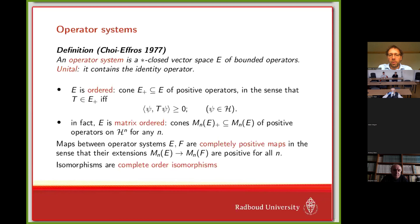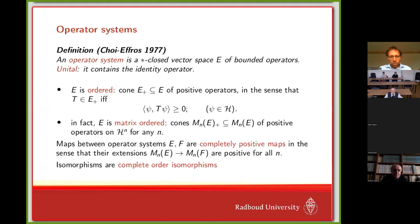What you see appearing is a structure that can be formulated without referring to operators — just a star vector space with a cone of positive elements, where positivity extends to matrices of E. That's the abstract operator system. It's possible, as shown in Choi and Effros, to realize them always as concrete operator systems. The operator systems I will use are typically finite dimensional, which really helps.